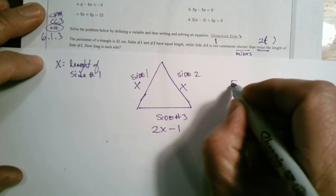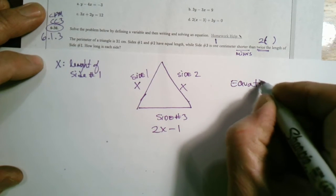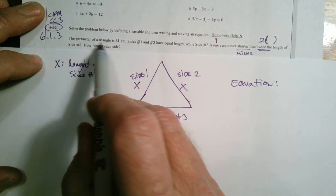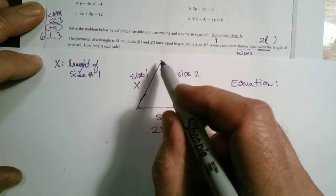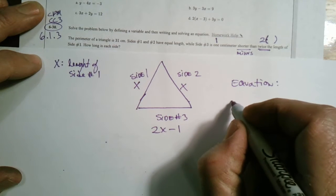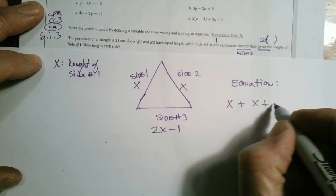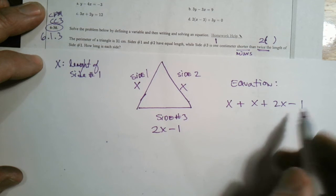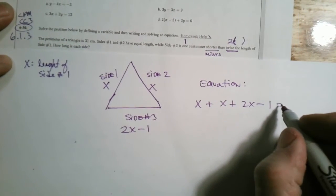So I got my side 1, side 2, side 3. So how do I write my equation? The equation comes from the fact that they gave you the perimeter. They told you the perimeter is 31 and perimeter is what? Add all the sides. So my equation is going to be x plus x plus 2x minus 1. Side 1, side 2, side 3, all should equal 31.